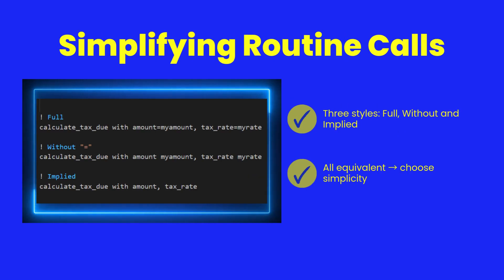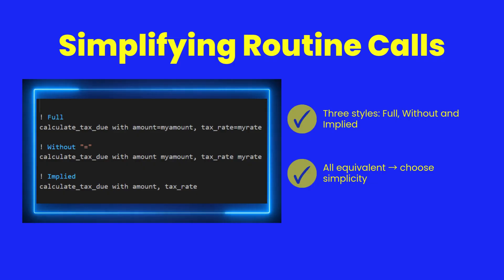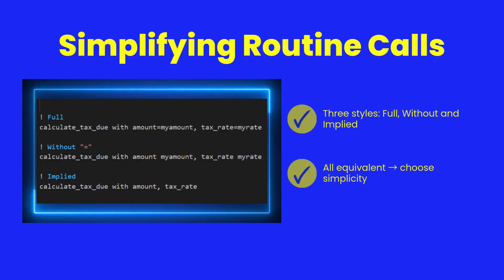There are three ways to call a routine: full syntax, shorthand without equals, or the fully implied version. All three work the same, but the implied style keeps your code cleanest.